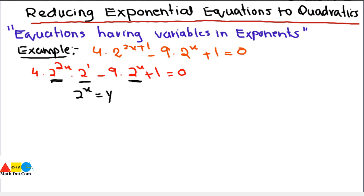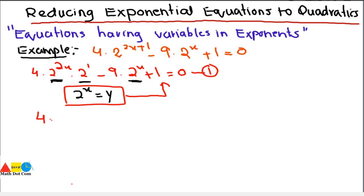The substitution is: let y = 2^x. We substitute this into the equation. Since 2^(2x) = (2^x)², we get y². We write 4y² because the power in the original term is 2x while in the substitution we have x, so we get y squared.